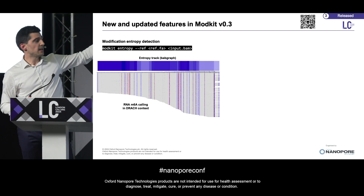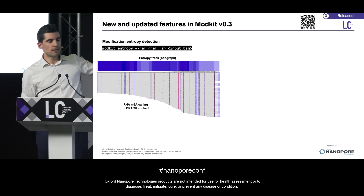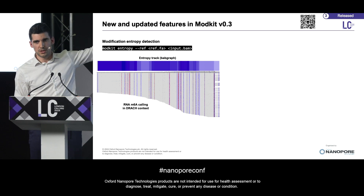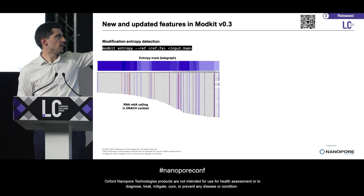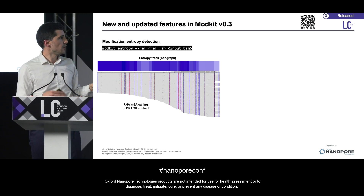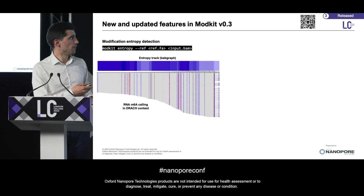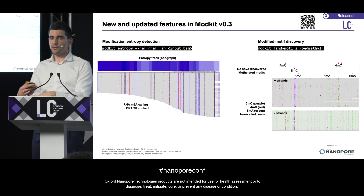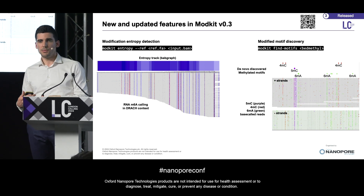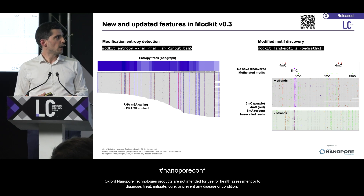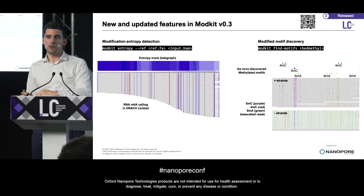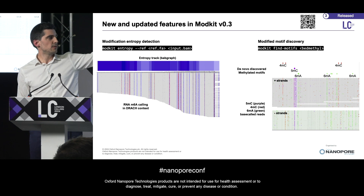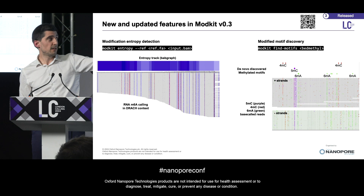Another new feature is the entropy command, which gives you the areas of your genome that are highly variable modification-wise versus the ones that are more conserved. It produces a bedGraph track you can load into IGV, where dark areas indicate high variability and light areas indicate more conserved modification. Finally, the new findMotif command lets you identify and discover de novo modification motifs in your data, which is particularly relevant for bacterial genomics. It produces a list of modified motifs — as shown in this example from H. pylori.